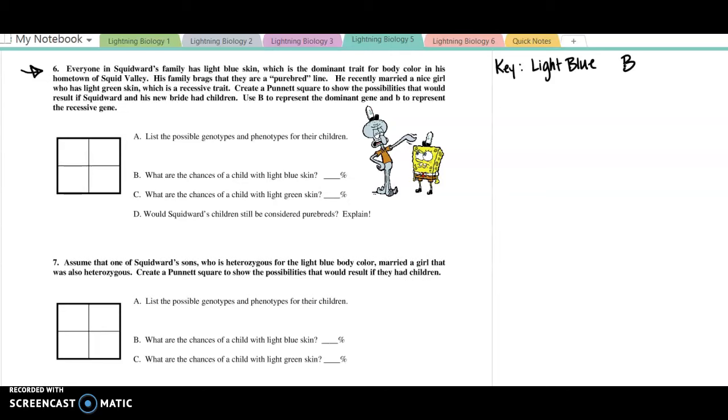In his hometown of Squid Valley, his family brags that they are purebred. So purebred, if you think back, purebred means that they only have the dominant allele to give. A purebred is the same thing as homozygous. He recently married a nice girl who has light green skin. So light green is recessive, so it would have to come with the genotype little b, little b. So now I have my key.